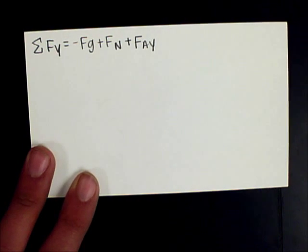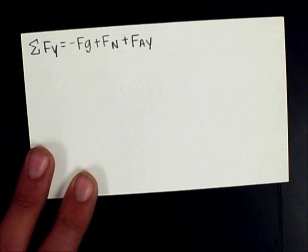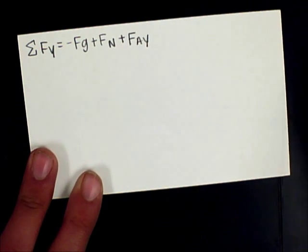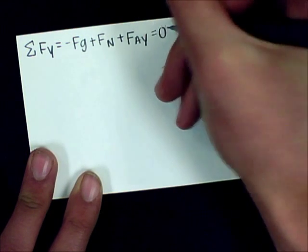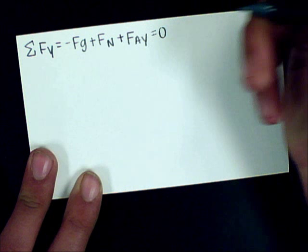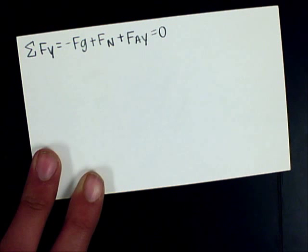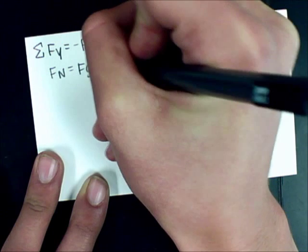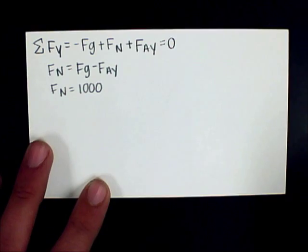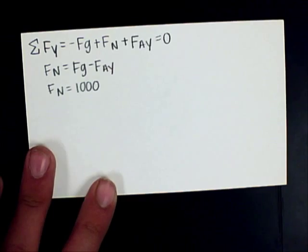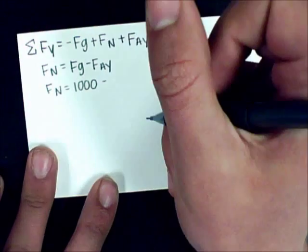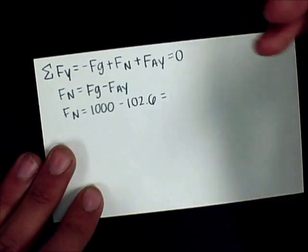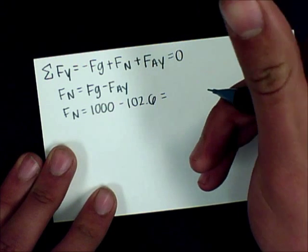Now we need to recalculate the normal force, since we are now pulling the crate instead of pushing it. We use the same concept of calculating all forces in the y direction, except now the applied force in the y direction will be positive because we're pulling it up. Rearranging, the normal force equals 1,000 minus 102.6, yielding an answer of 897.4 newtons.